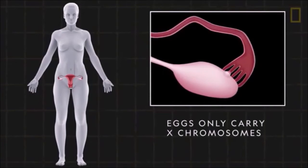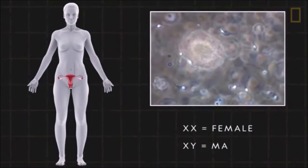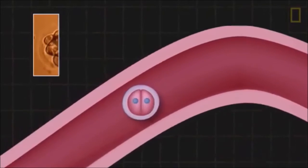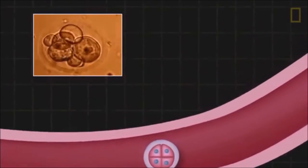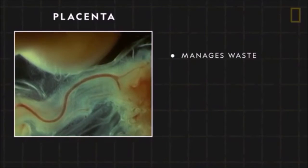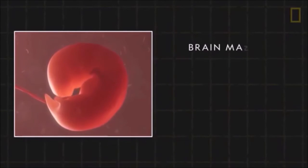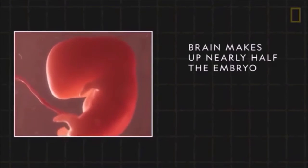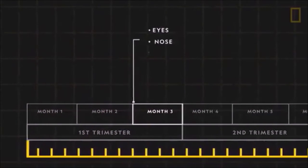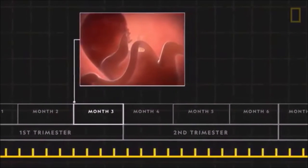It begins in the uterus where a sperm fertilizes an egg. If the sperm carries an X chromosome, the baby will become female; a Y chromosome results in a male. The fertilized egg, or zygote, divides repeatedly as it travels through the fallopian tube, implanting itself on the uterine wall to form both the embryo and the placenta — an organ found only in eutherian mammals that manages waste and provides nutrients, oxygen, and hormones via the umbilical cord.